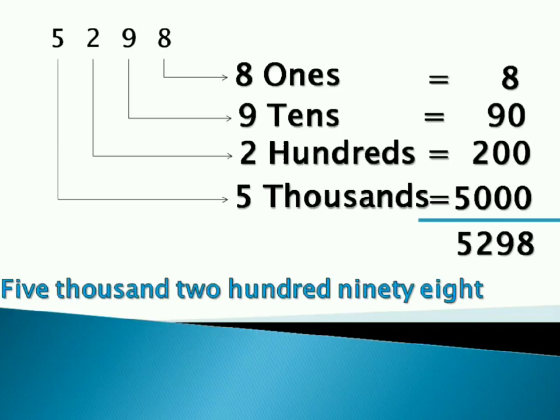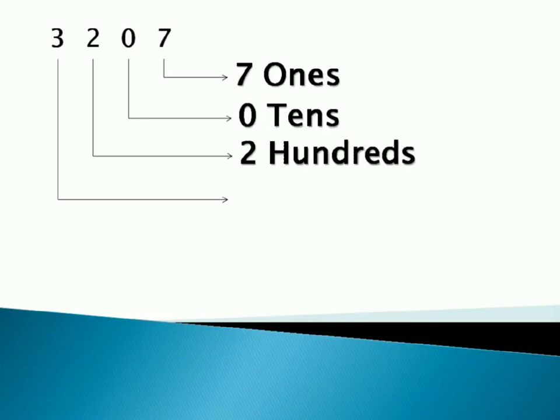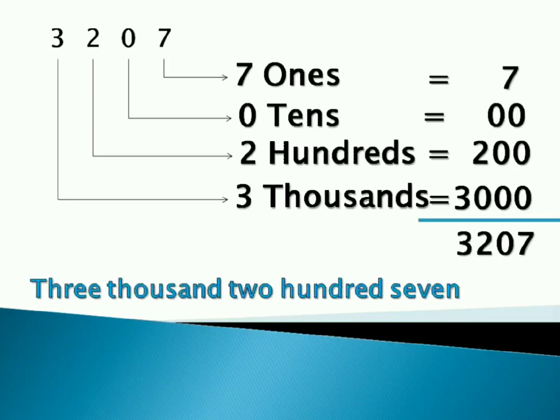Let's try with one more example. Here we have seven ones, zero tens, two hundreds and three thousands, which becomes 3207. That is three thousand two hundred and seven. Isn't it simple?